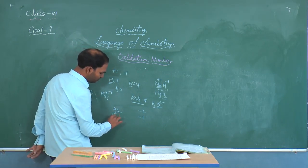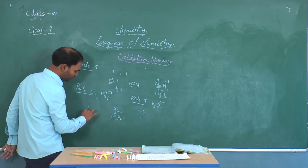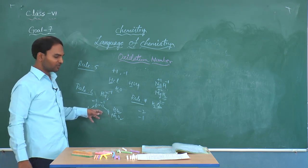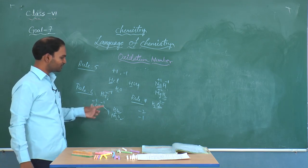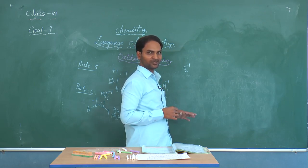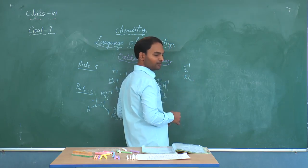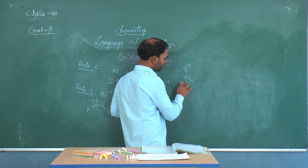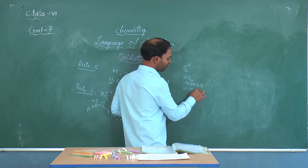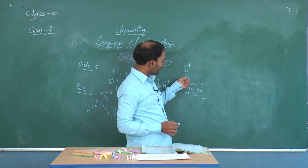In peroxides, oxygen exhibits -1 oxidation state. In the case of superoxides — for example KO2 — you need to find the oxidation state of oxygen. Potassium has +1 oxidation state, so: 1 + 2x = 0, which gives x = -1/2. Therefore, in superoxides, oxygen exhibits -1/2 oxidation state.